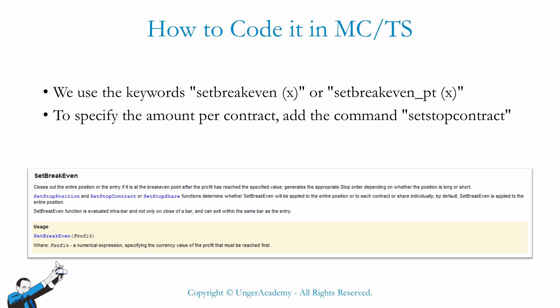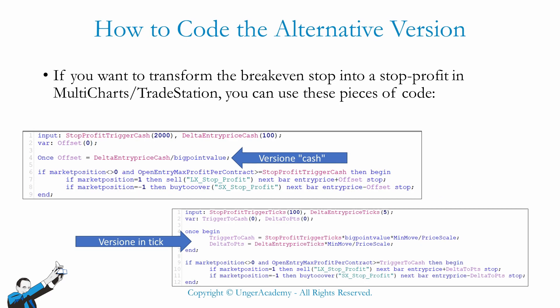Here you can see an excerpt from the MultiCharts User Guide in which the same things are explained - here's the SetBreakeven command and between the brackets the amount to be used. We often hear traders, mainly systematic traders, talk about a sort of breakeven stop that's not really a breakeven, but rather an order that is placed slightly above the entry price if you're trading long, or slightly below the entry price if you're trading short. So rather than a breakeven stop, in this case we may talk about a stop profit.